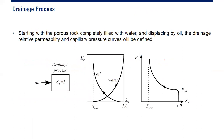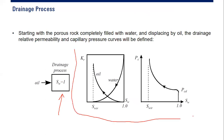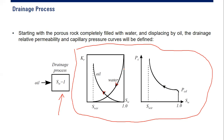In the drainage process, we start with the porous rock completely filled with water — water saturation is 100%. We then displace the water with oil, and this is called the drainage process. The drainage relative permeability curve shows that as water saturation decreases and oil saturation increases, relative permeability to oil increases while relative permeability to water decreases.